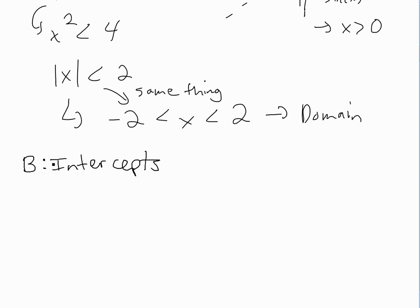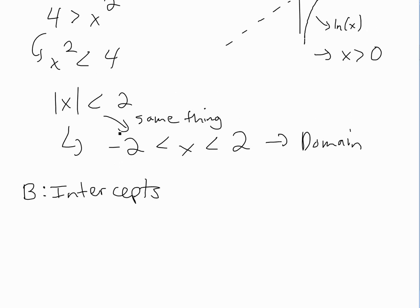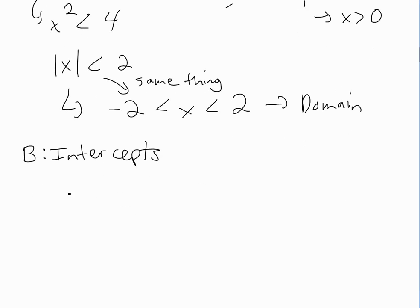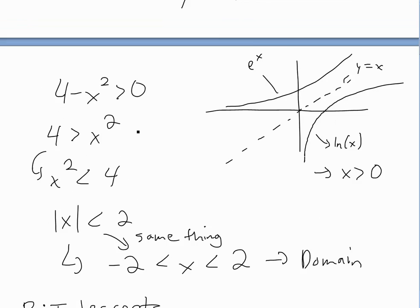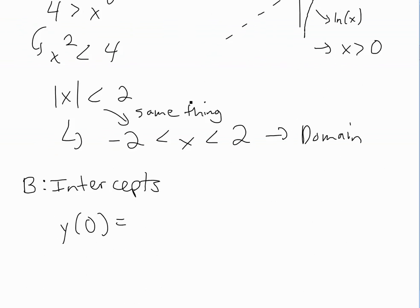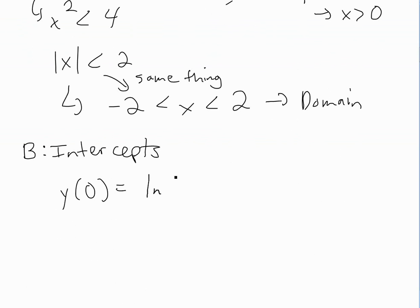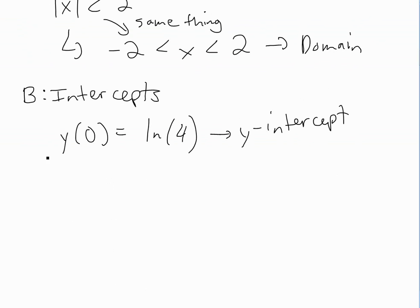Now if we look at part B — intercepts. The y-intercept is when we set x equals zero. Substituting zero in, we get y equals ln(4), and this is the y-intercept. Now to get the x-intercept, we have to set y equal to zero, so we get 0 equals ln(4 - x²).